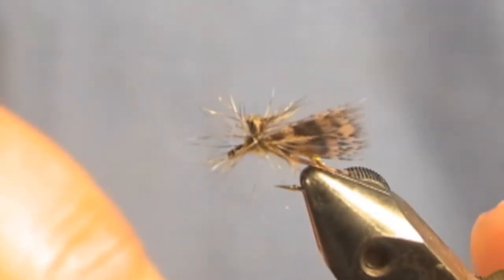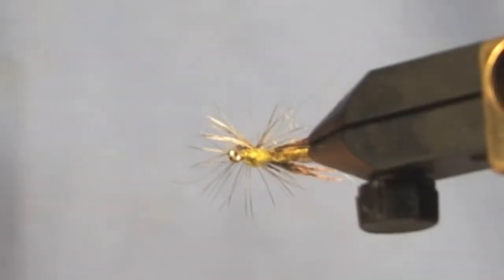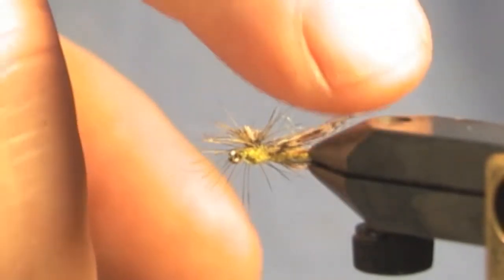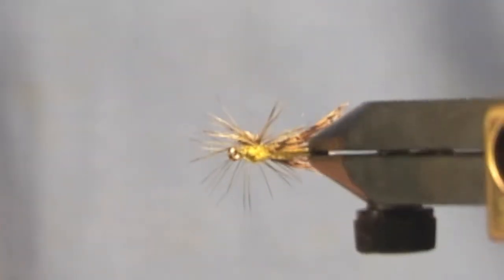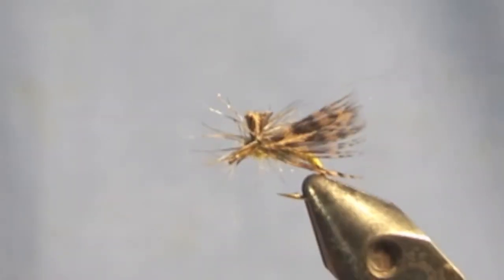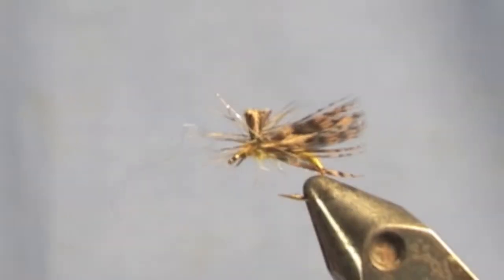This is a parachute-like pattern, a paracaddis. It's got the green body, which is the apple green. This might even be a little too olive, but it's pretty close. You can tie it a little bit more light or green if you want, but it should be fine dubbing. It's a grouse feather and hackle.